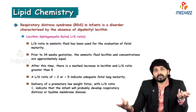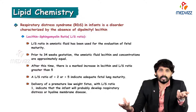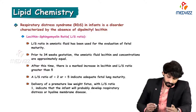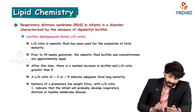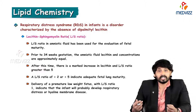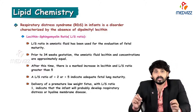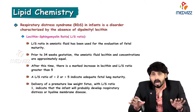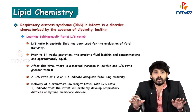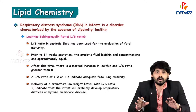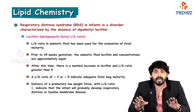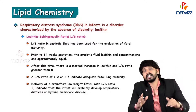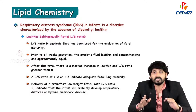That is the importance of dipalmitoyl lecithin. What is the normal ratio? Prior to 34 weeks of gestation, the amniotic fluid lecithin concentration and sphingomyelin concentration are approximately equal. After this time, there is a marked increase in lecithin — the L/S ratio becomes greater than 5. Beginning after 34 weeks of gestation, there is an enormous increase in lecithin.